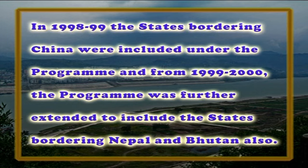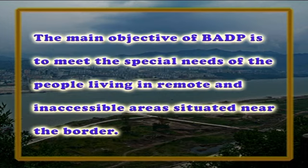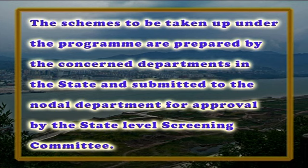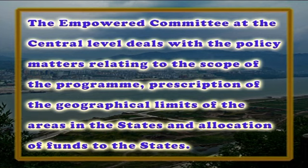In 1998-99, the states bordering China were included under the program, and from 1999-2000, the program was further extended to include the states bordering Nepal and Bhutan also. The main objective of BIDP is to meet the special needs of the people living in remote and inaccessible areas situated near the border. This is a 100 percent centrally funded program and Special Central Assistance, SCA, is provided for execution of approved schemes. The block is the basic unit for the program. Schemes are prepared by the concerned departments in the state and submitted to the nodal departments for approval by the state-level screening committee. The empowered committee at the central level deals with policy matters relating to the scope of the program, prescription of geographical limits, and allocation of funds to the states.